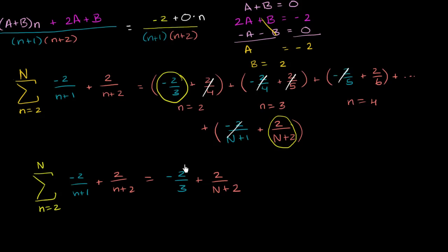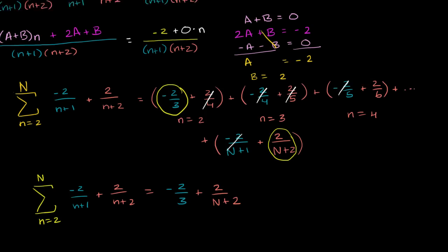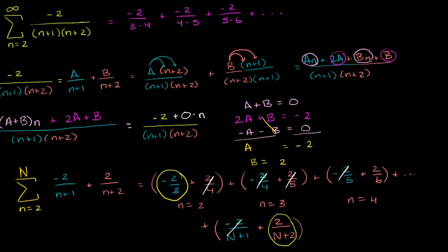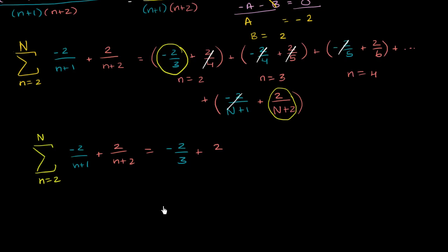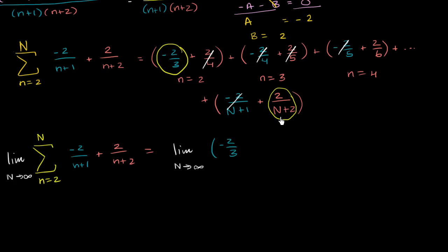Our original infinite sum is the limit as capital N approaches infinity of negative 2/3 + 2/(N+2). As N goes to infinity, the negative 2/3 is unaffected, and 2 over an infinitely large number goes to 0. So we're left with negative 2/3.